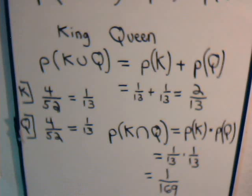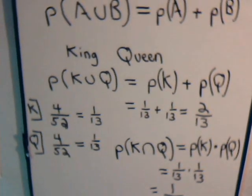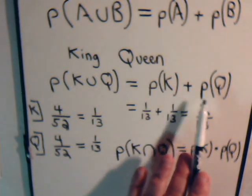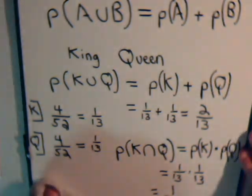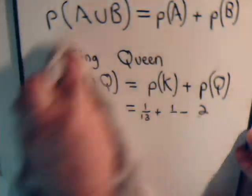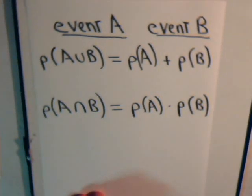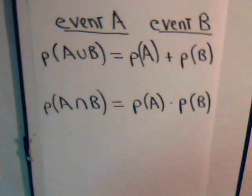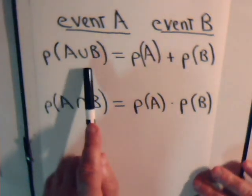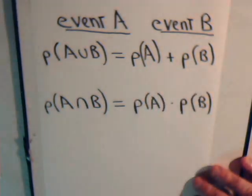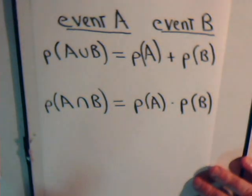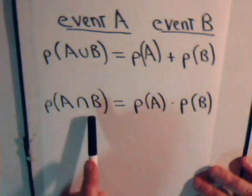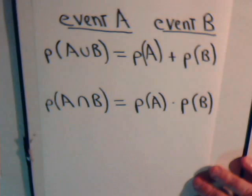To summarize: to have a king and a queen when drawing two cards, we multiply the two individual probabilities together. To draw a single card and have it be a king or a queen, we add the two separate probabilities. This is a simple demonstration of compound events — for two independent, mutually exclusive events A and B, to have A or B happen it's the sum of their probabilities; to have them happen together, you multiply the two probabilities.